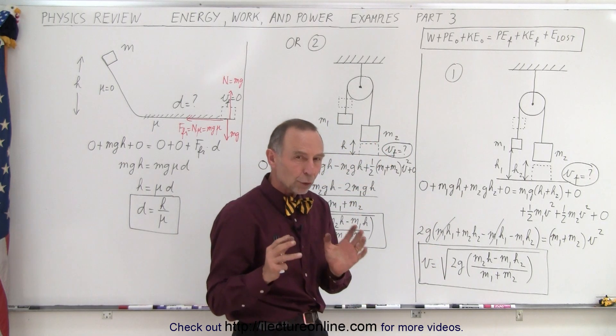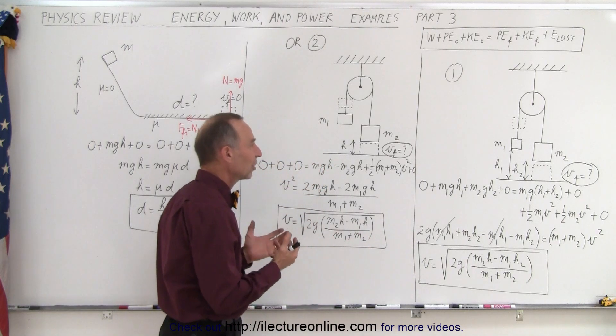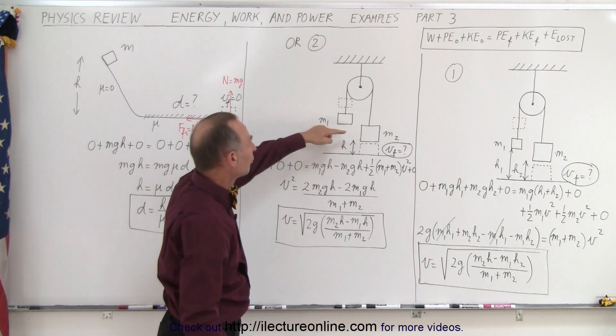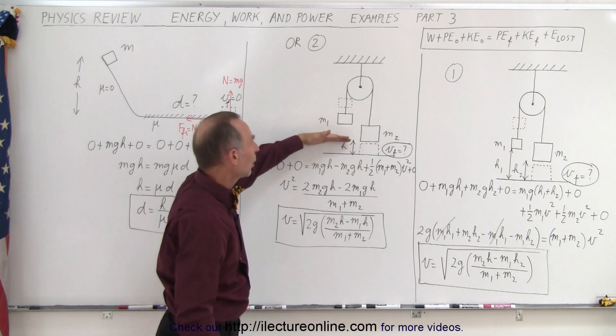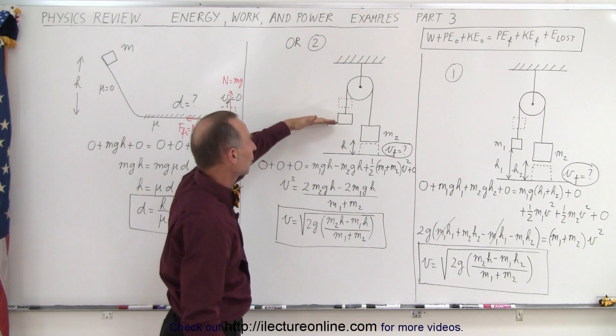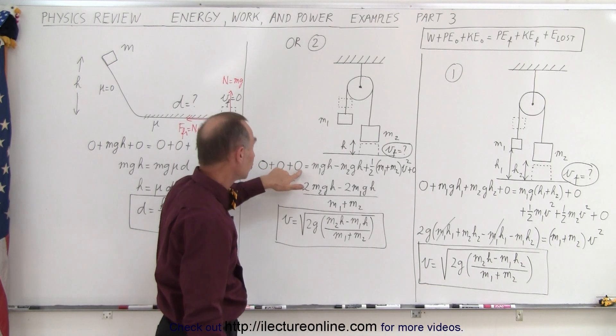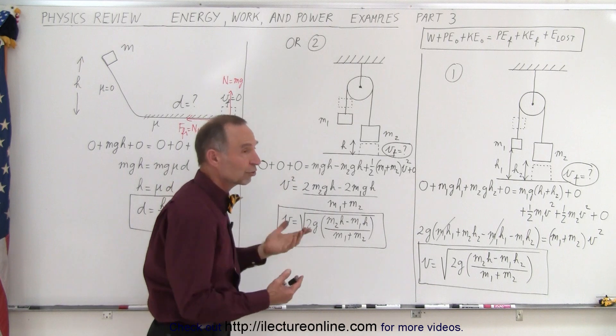You can actually work a problem like this a little quicker. We can say, on the left side we can call the zero height for block m2 over here and the zero height for block m1 over there, so we end up with no potential energy and no kinetic energy and no work put into the system when we start.